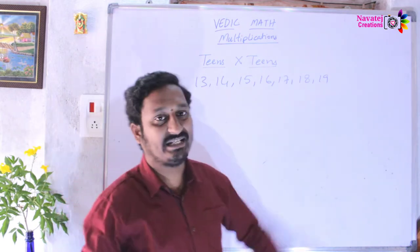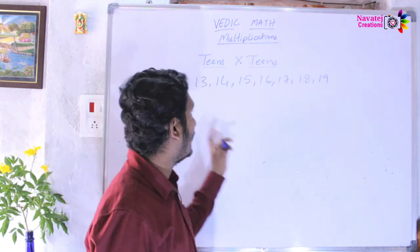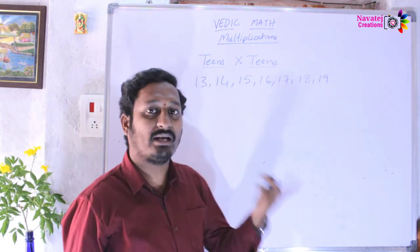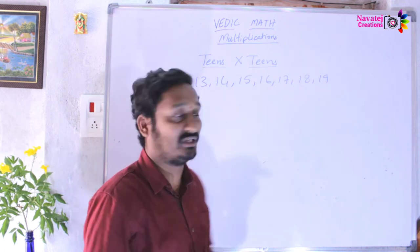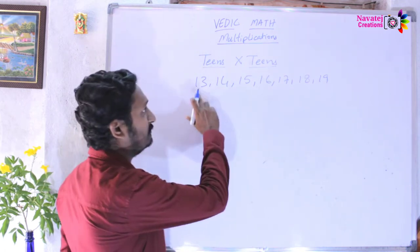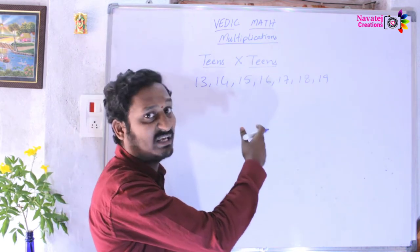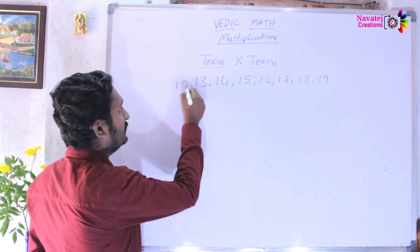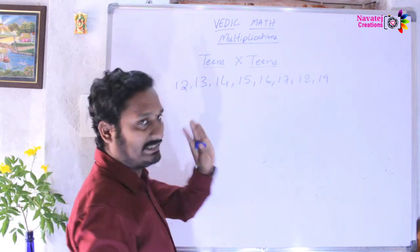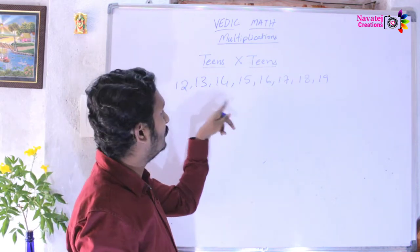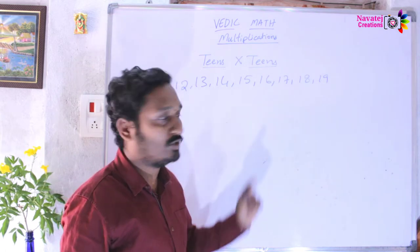These numbers are teens into teens. Also, 12 uses the same teens multiplication process. 12 is not a teen number, but I will include it using the same method.